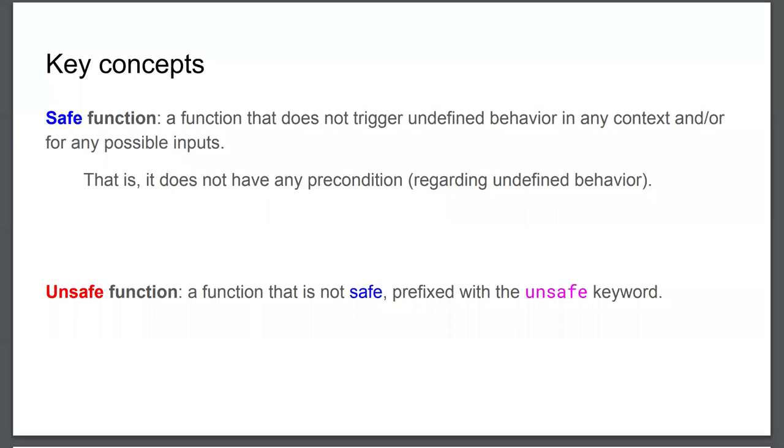A safe function cannot have any precondition about, for example, the validity of pointers. On the contrary, an unsafe function has safety preconditions — you can say to the caller that the pointer being passed must be valid. This is what we do in C all the time. In C, virtually every function that takes a pointer is implicitly unsafe, because normally if you take a pointer you are going to dereference it, which means the function has a precondition even if we don't write it down.